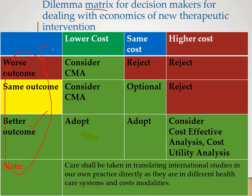In pharmacoeconomics, we compare outcomes versus costs. The cost may be lower, the same, or higher. If the outcome of one mode of therapy is worse, you have to reject it — and if the cost is also high, we reject it. If the outcome is the same but cost is lower, you may consider the alternate mode of therapy.